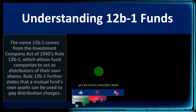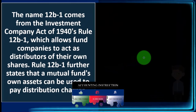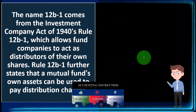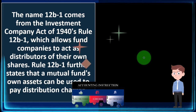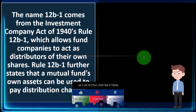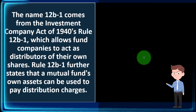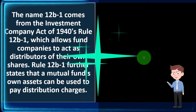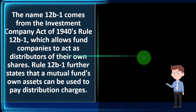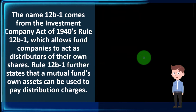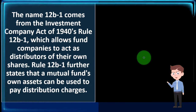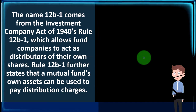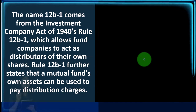Understanding the 12B1 Fund: the name comes from the Investment Company Act of 1940's Rule 12B1, which allows fund companies to act as distributors of their own shares. Rule 12B1 further states that a mutual fund's own assets can be used to pay distribution charges.